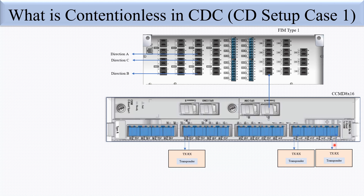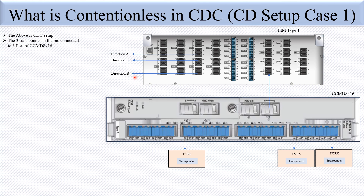The CCMD x16 is connected to three different WSSes to get three different directions: direction A, direction B, and direction C. A lambda coming from direction A goes to one transponder, the same lambda coming from direction B goes to another transponder, and the same lambda from direction C goes to the third transponder. The condition is that the same lambda is dropping on the same MXD device — for example, wavelength 1530.33 nm — dropping on all three port numbers, but each coming from a different direction.